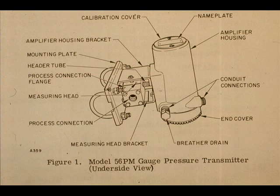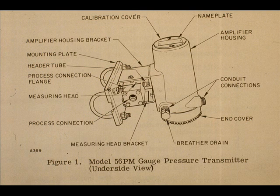This is an underside view of the 56PM gauge pressure transmitter. One of the objectives of this lesson is to identify parts of the transmitter. The items are named and are self-explanatory.